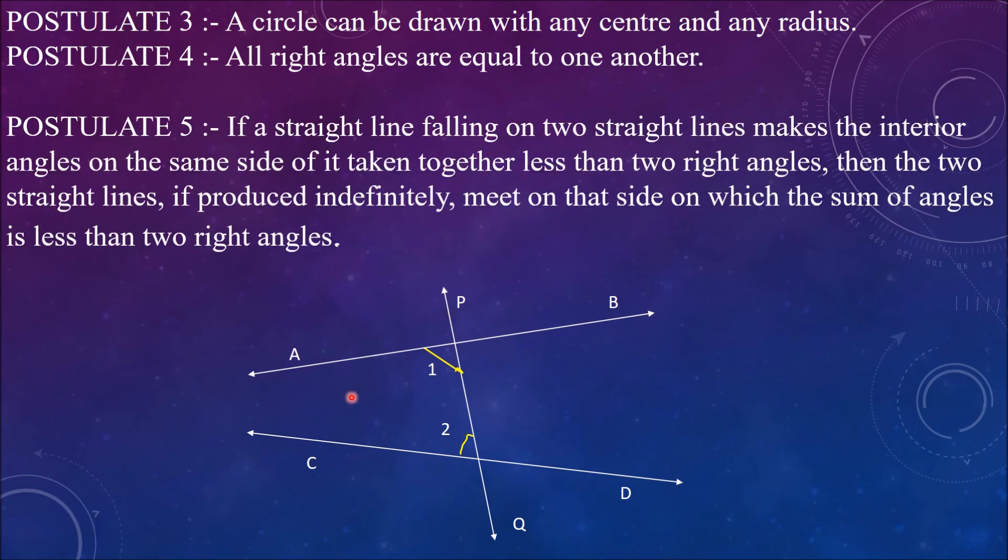It states that if a straight line falling on two straight lines makes the interior angles on the same side of it taken together less than two right angles, then the two straight lines, if produced indefinitely, meet on that side on which the sum of angles is less than two right angles.